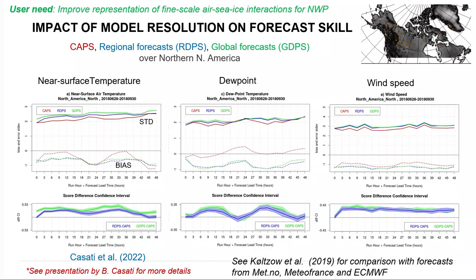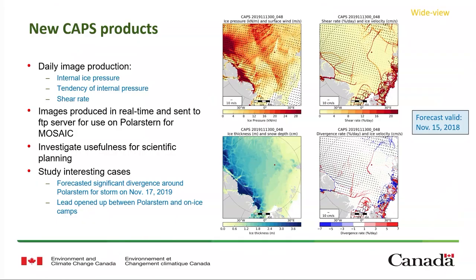There's some work done by Barbara Cassati and others looking at the verification of CAPS. This example shows comparison with CAPS, our regional forecast, and the global forecast - CAPS shown in red. For both bias and standard deviation, we see some benefits for Canadian stations for near-surface temperature, dew point, and wind speed. There are more detailed results in a paper submitted by Barbara and also one by Morton Calzow published a couple of years ago.